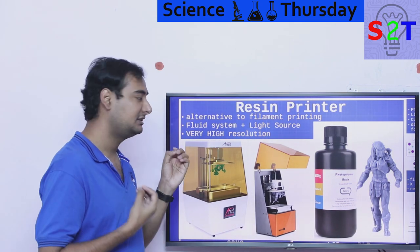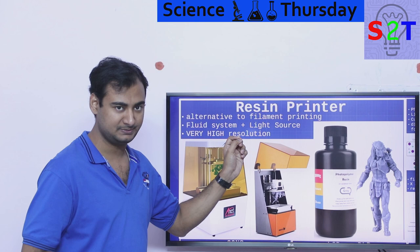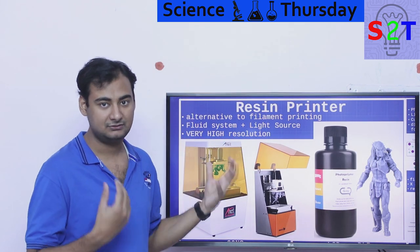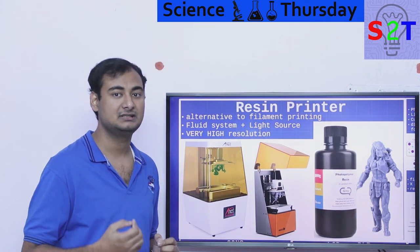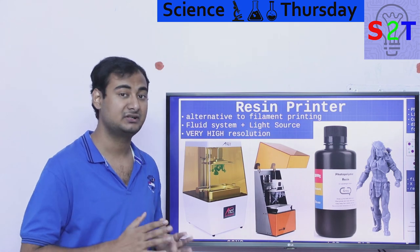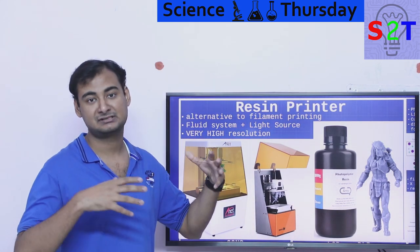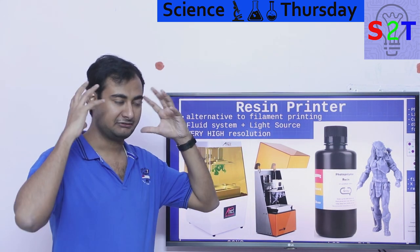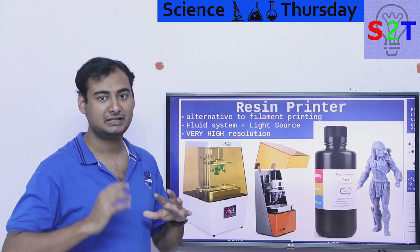Now resin printer is basically an alternative to filament printing. Filament printing is very good for what it does, however it lacks one serious thing: resolution. If you're making something big like an Iron Man helmet, no problem. But it doesn't have the resolution for small parts.